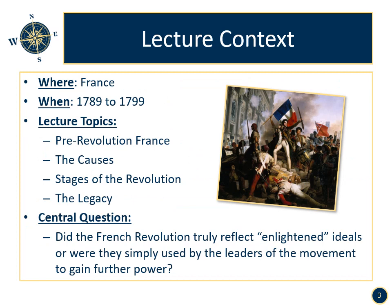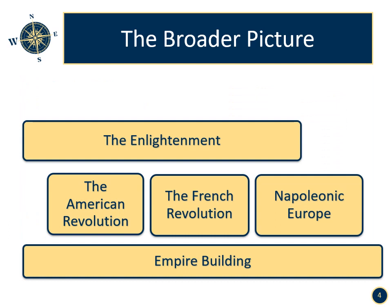Lecture context: Where — France. When — 1789 to 1799. Lecture topics: pre-revolution France, the causes of the revolution, the stages of the revolution, and the legacy of the revolution. The central question of the week: did the French Revolution truly reflect enlightened ideals, or were they simply used by the leaders of the movement to gain further power? The broader picture: the French Revolution was preceded by the American Revolution and followed by the rise of Napoleon. The Enlightenment and empire building would happen concurrently with the French Revolution.